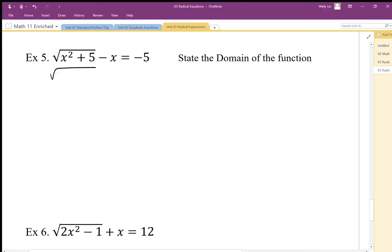To find out the outside domain restriction, it's much easier to make it equal to the square root first. I'm going to add x to both sides, and this makes it easier to see the outside restriction.